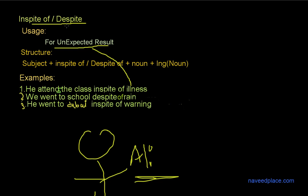The second example is: 'We went to school despite of rain.' Despite of rain, we went to school — that is an unexpected result. The third example is: 'He went to Dubai in spite of warning.' When someone gives a warning, we expect you will not go there, but he went — again an unexpected result. To show this, we use either 'in spite of' or 'despite.'